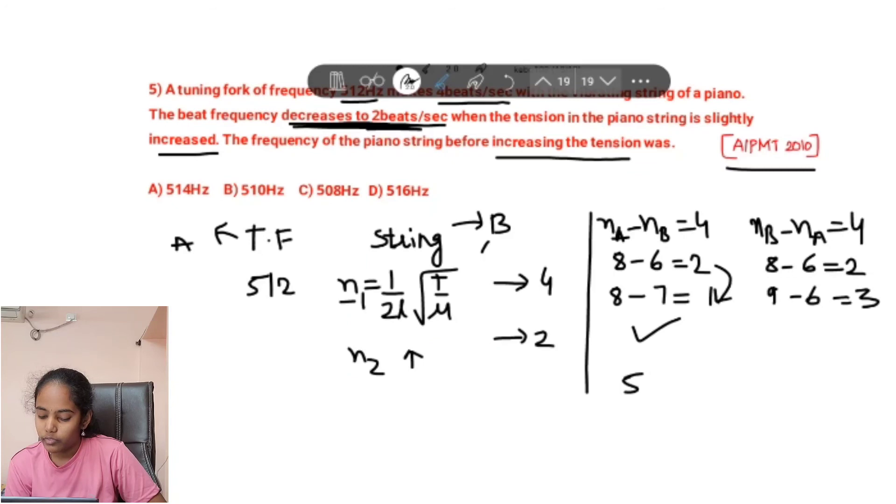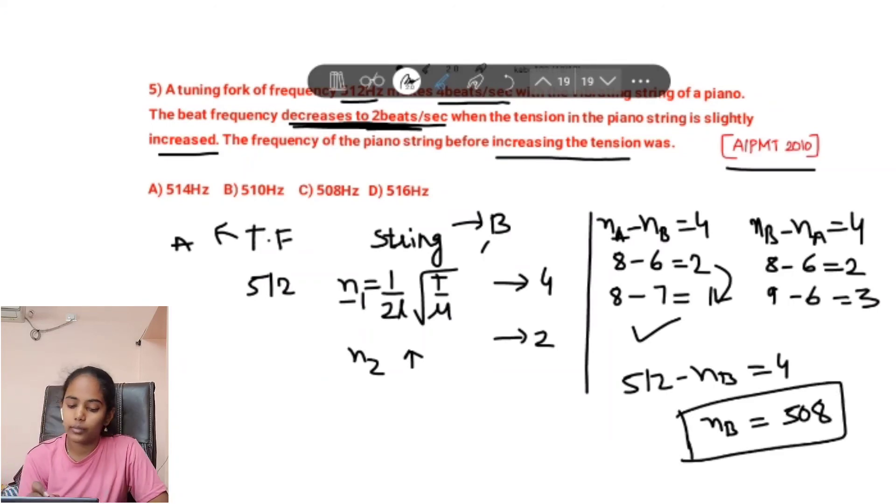So this will be the one. So nₐ is 512 minus n_b equals 4. So n_b becomes 512 minus 4, that is 508. So our answer will be 508, that is C option.